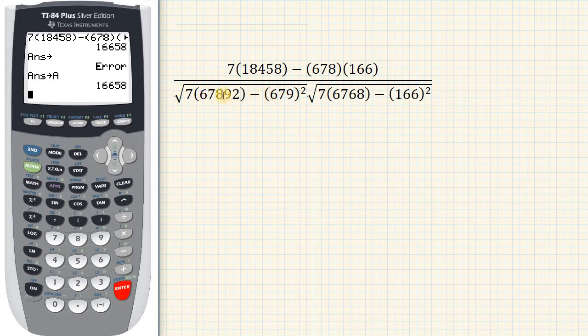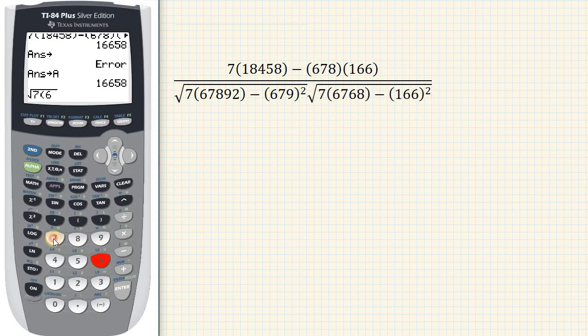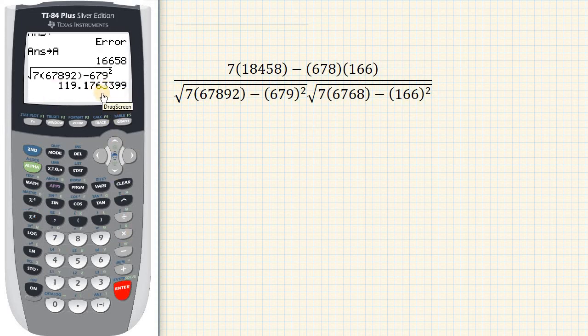Now let's enter in the denominator. So I want to do 2nd square root. See, there's the square root. And then I'm going to do 7, parenthesis, 6, 7, 8, 9, 2, close parenthesis, minus, and then 6, 7, 9. And then I need to square it. There's the square key. And so I hit enter. And that's the answer I get.